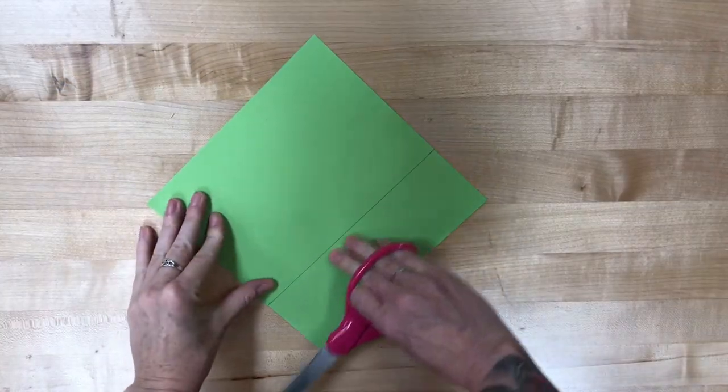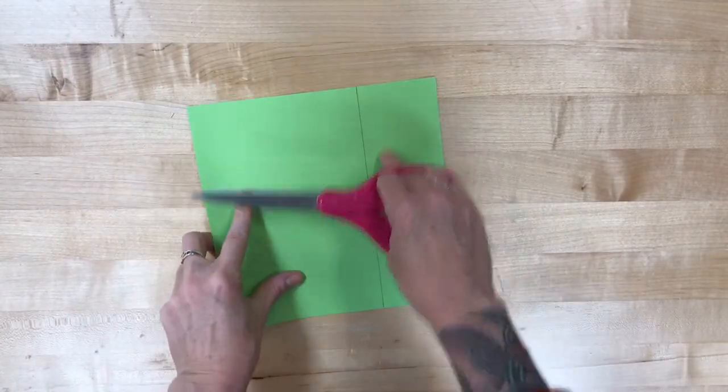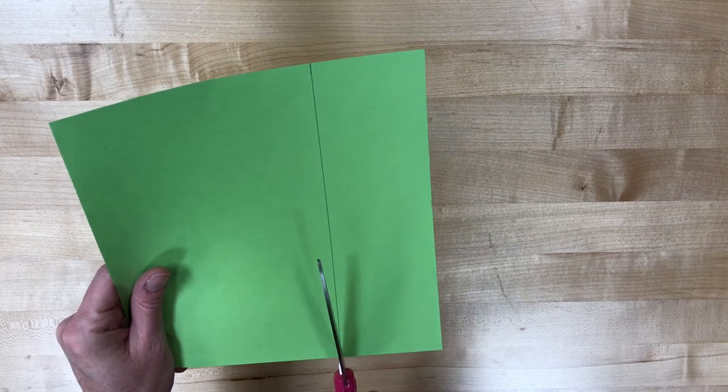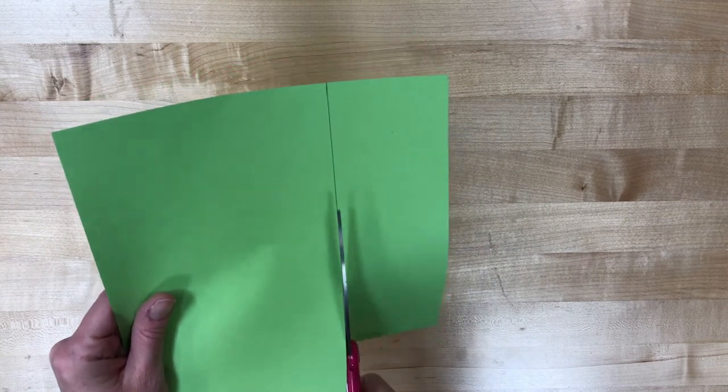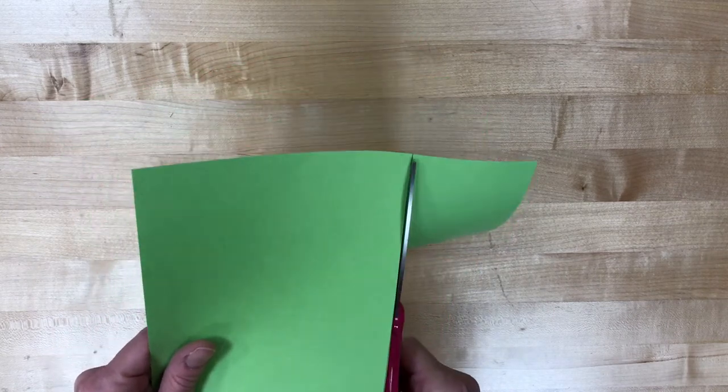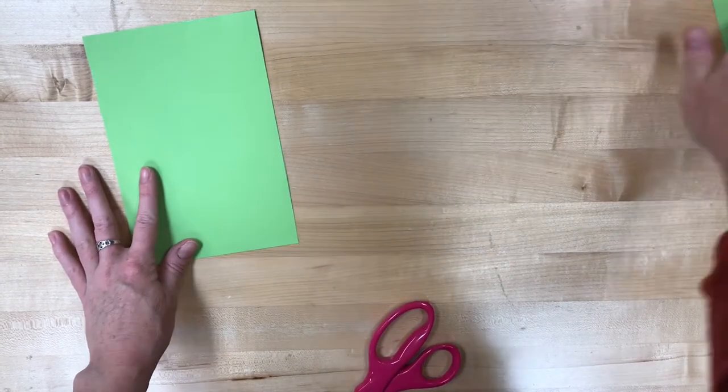We are going to start with a piece of paper that has a line drawn on it, and we are going to cut right along that line, but do not throw away the smaller sheet of paper. You are going to need it later.